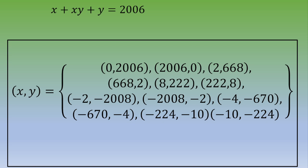So the final solutions are: (0, 2006), (2006, 0), (2, 668), (668, 2), (8, 222), (222, 8), (negative 2, negative 2008), (negative 2008, negative 2), (negative 4, negative 670), (negative 670, negative 4), (negative 10, negative 224), and (negative 224, negative 10).